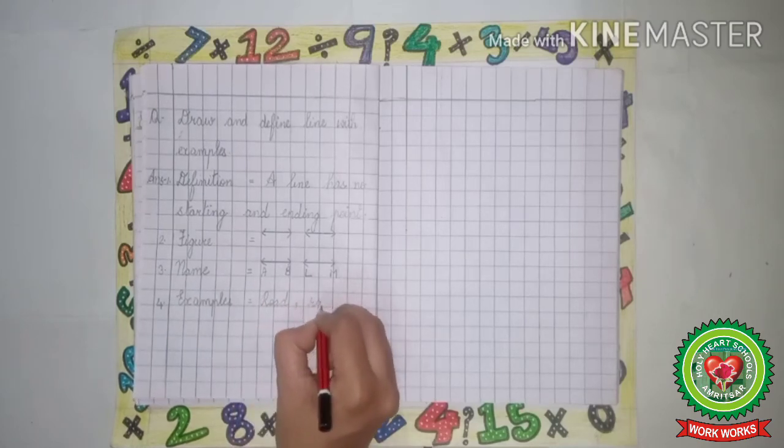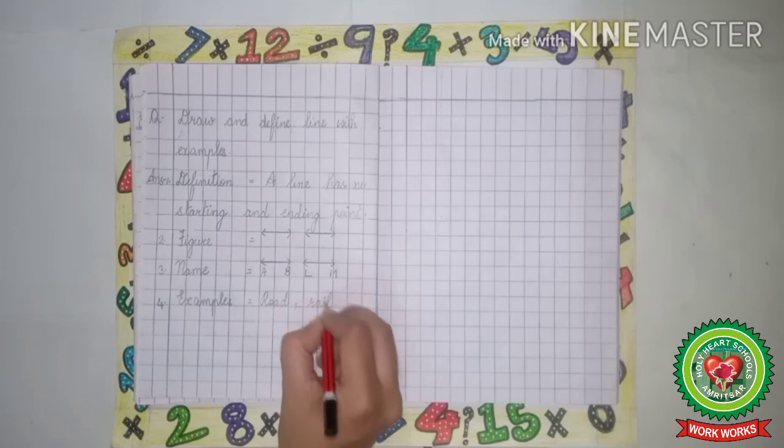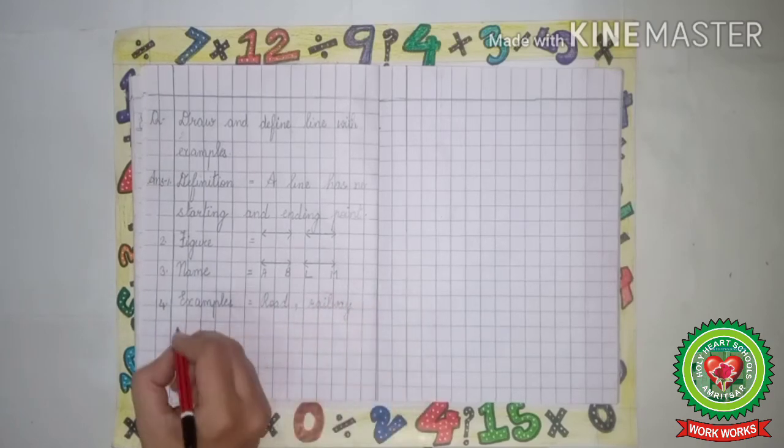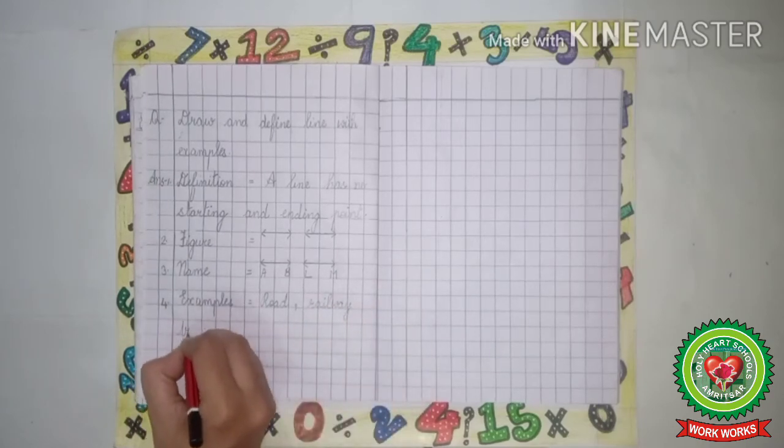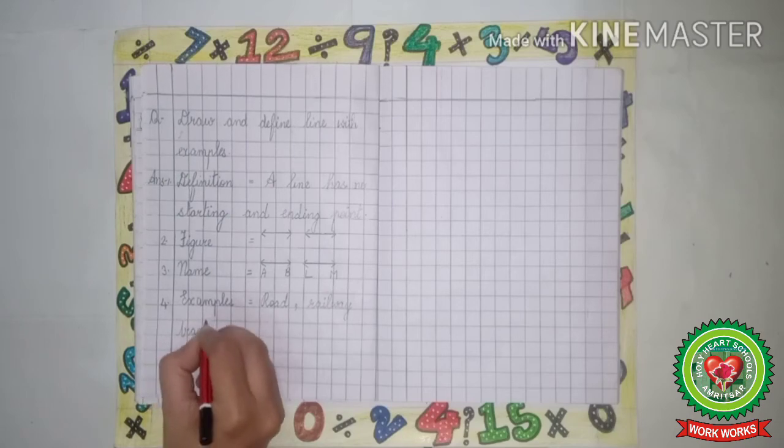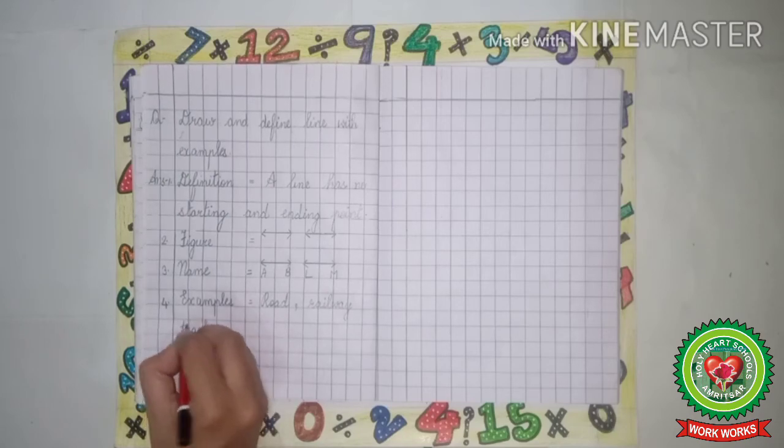Railway track, R-A-I-L W-A-Y railway, track, T-R-A-C-K track, comma.